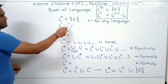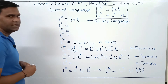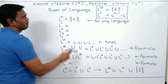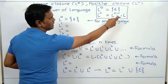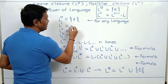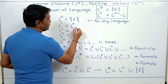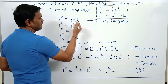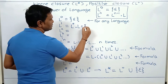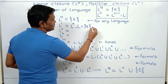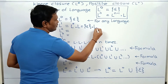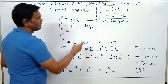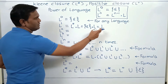So L power 0 is epsilon for any language. L power 1 will be L power 1 minus 1 dot L, which is L power 0 dot L. L power 0 is epsilon, so this becomes epsilon dot L, which is L. Epsilon dot L is L.